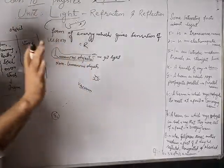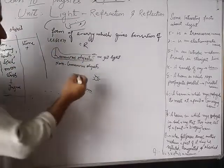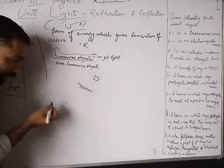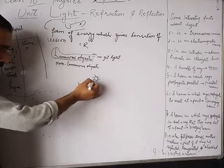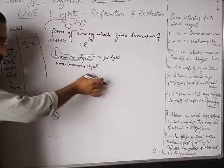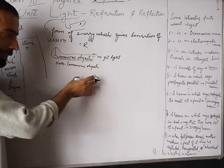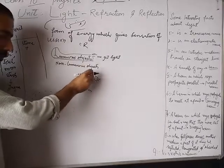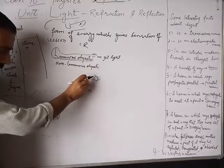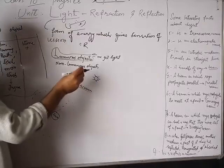Vacuum is devoid of any particle — there is nothing in it, no air, no particle. And the sunlight energy we receive on earth — this energy comes from the sun and reaches the earth passing through a medium where there is nothing at all, a space where there is nothing.